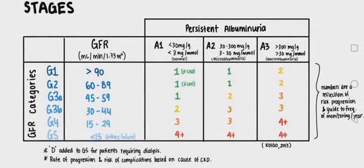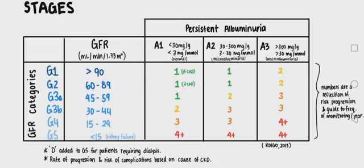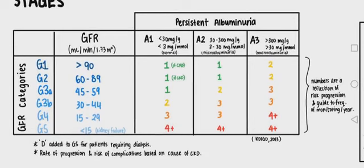The stages of CKD are classified according to GFR categories and persistent albuminuria. According to GFR in ml per minute: if GFR is greater than 90 it is G1, followed by G2, G3a, G3b, G4, and G5 in subsequent categories. Similarly, persistent albuminuria is categorized as A1, A2, and A3.